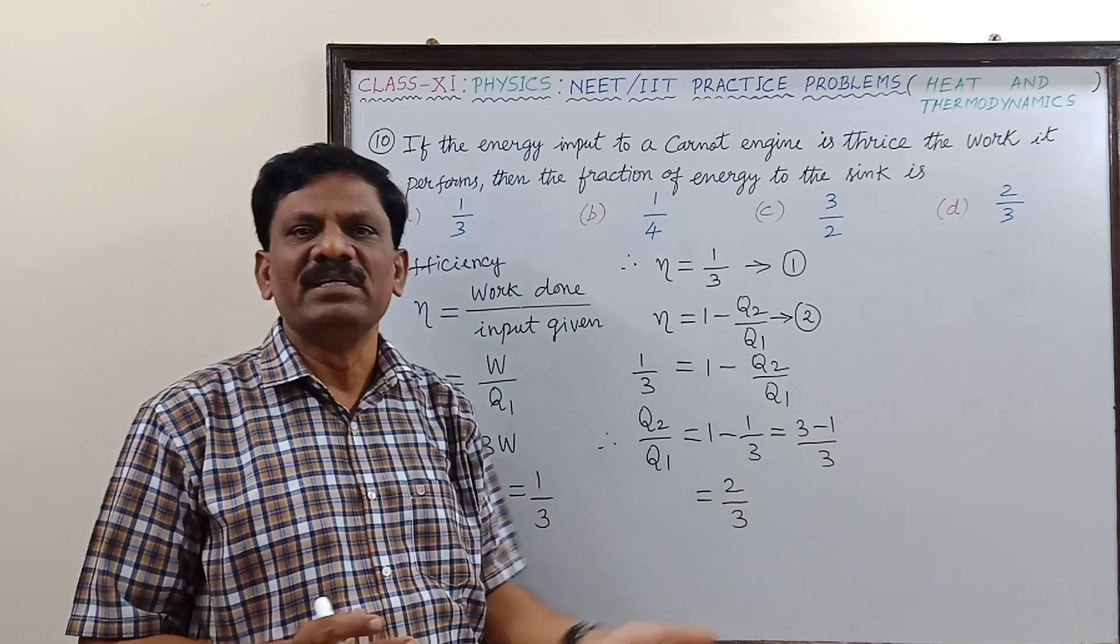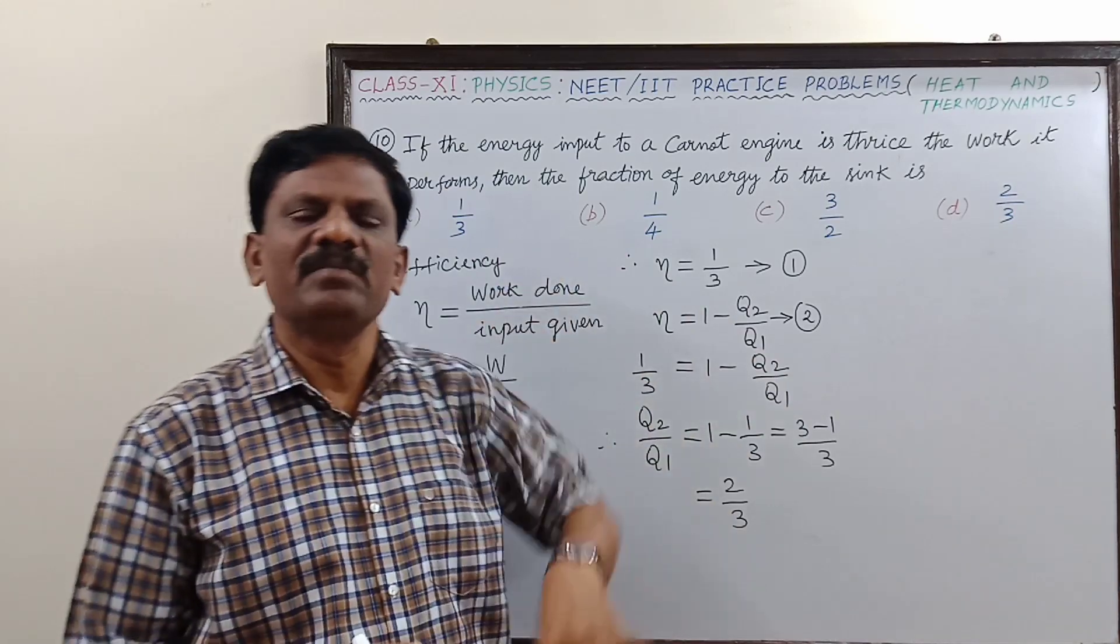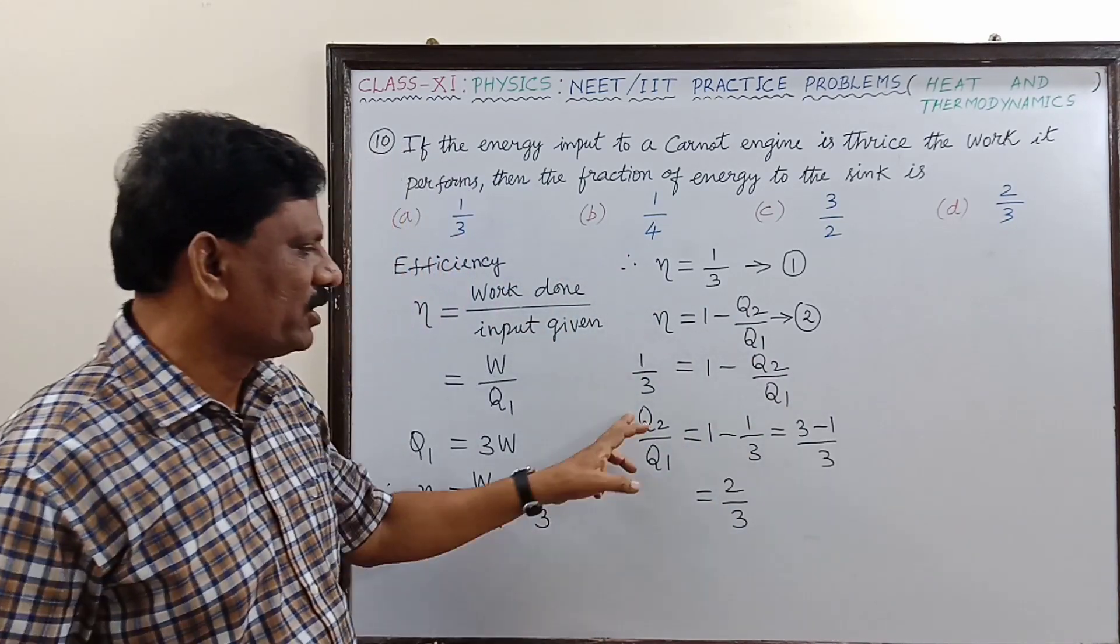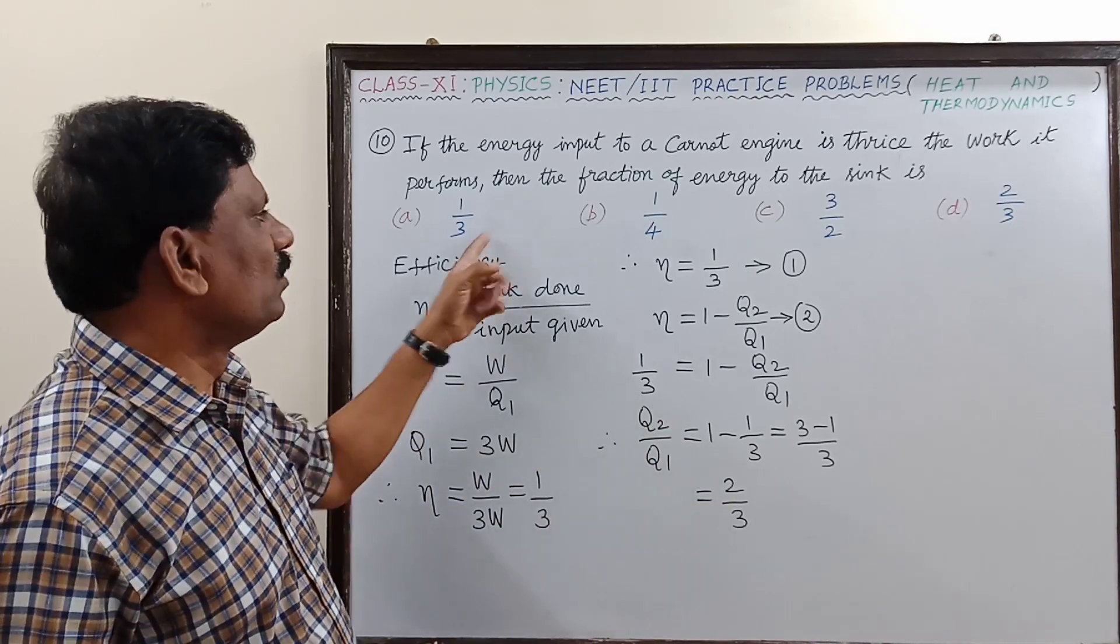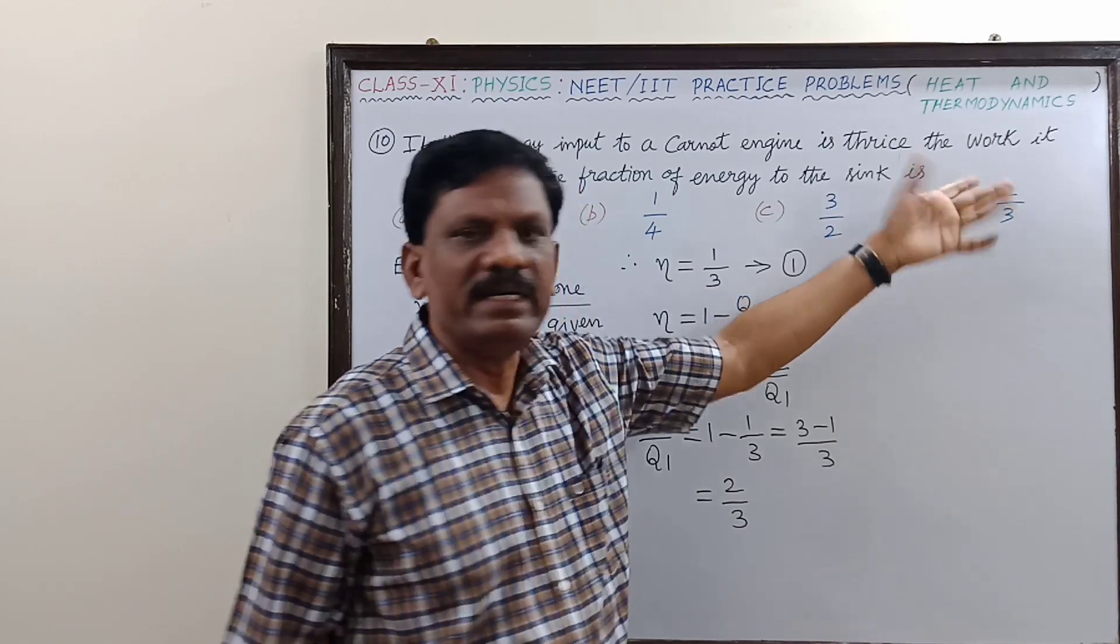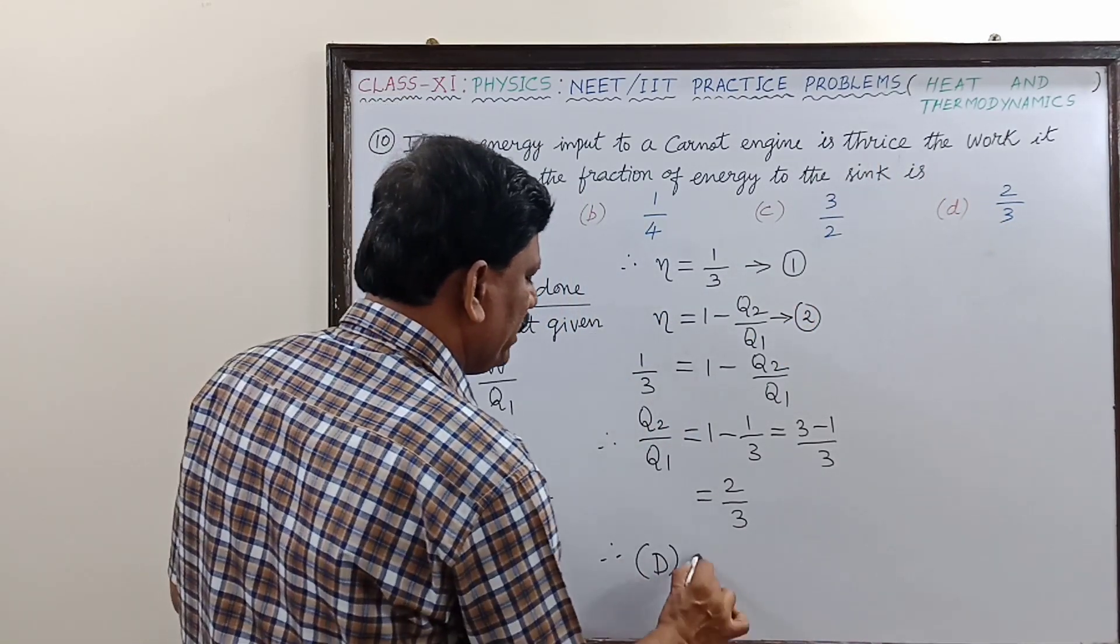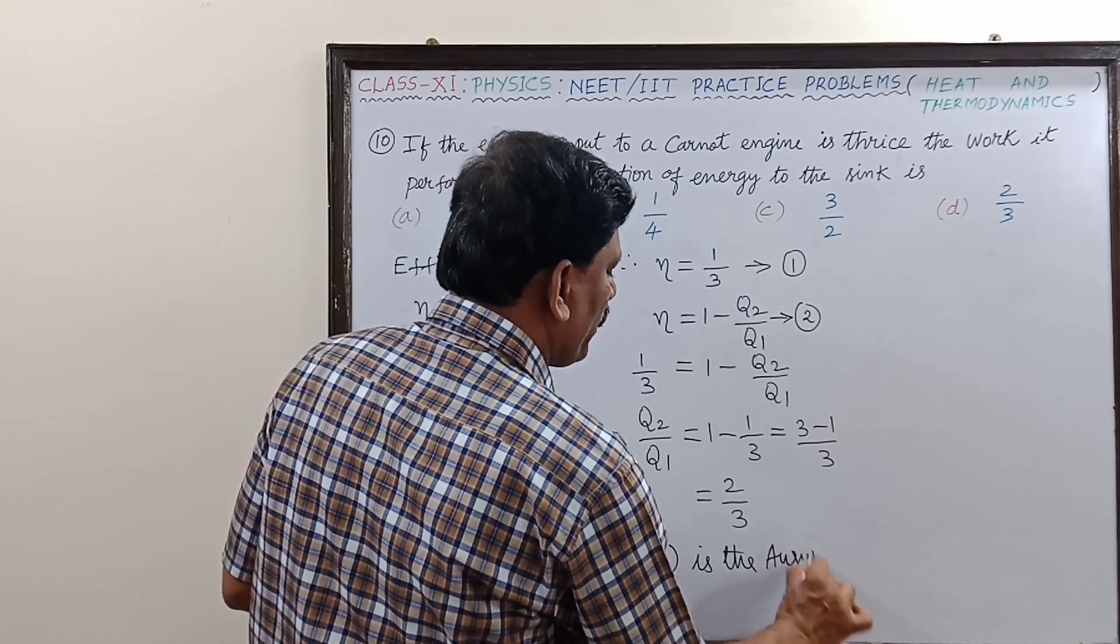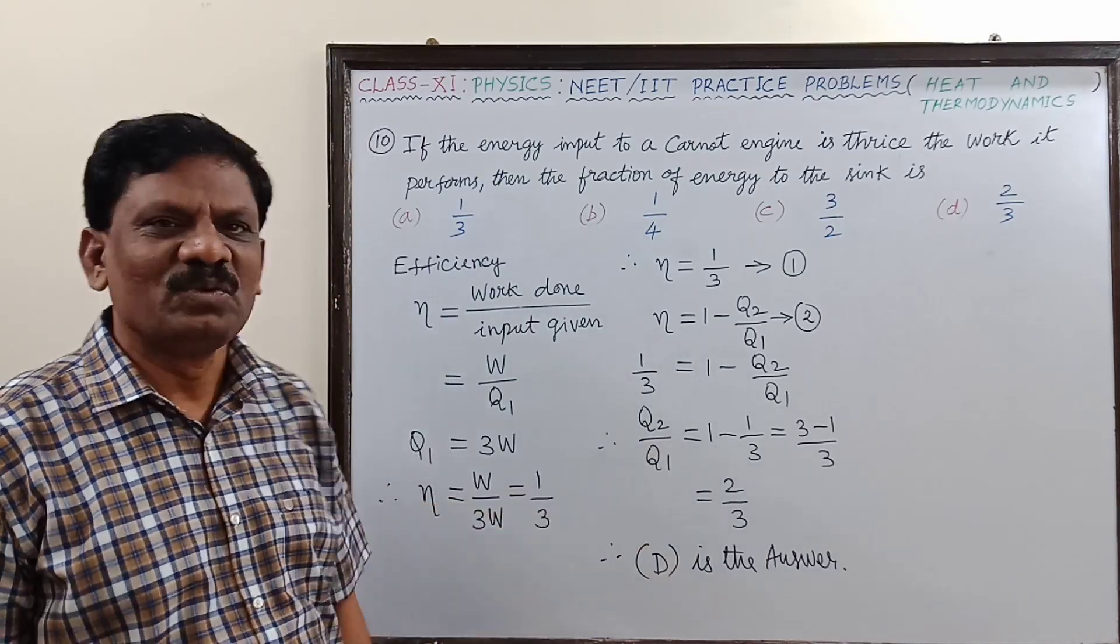How much fraction of the heat rejected means fraction rejected is the quantity of heat rejected divided by the quantity of heat taken from the source. Q2 by Q1 is found to be equal to 2 by 3, so which is the correct option? Option D is the right answer. I hope you must have understood well.